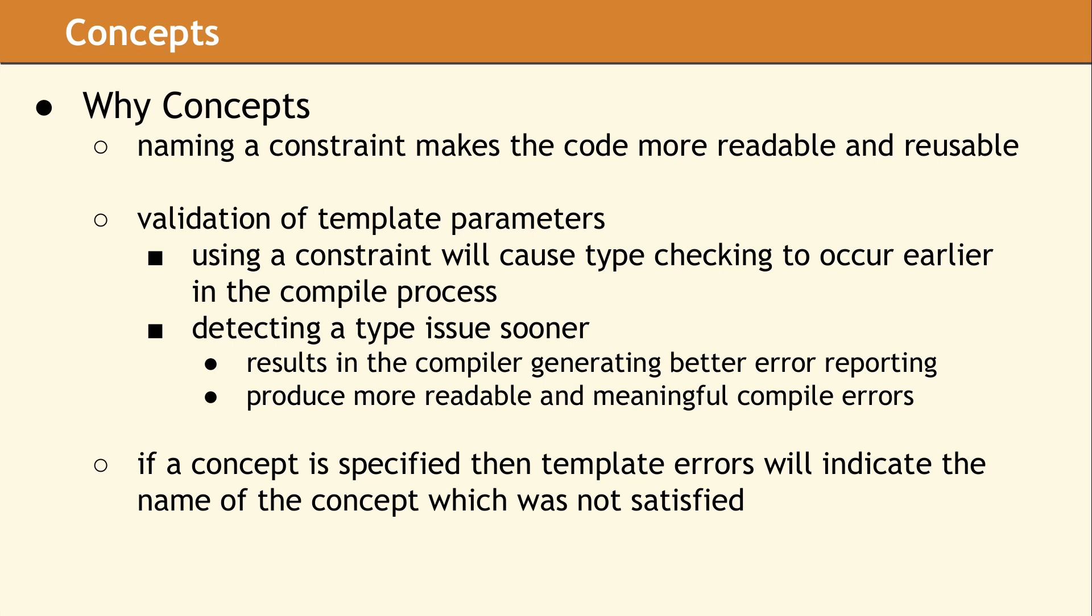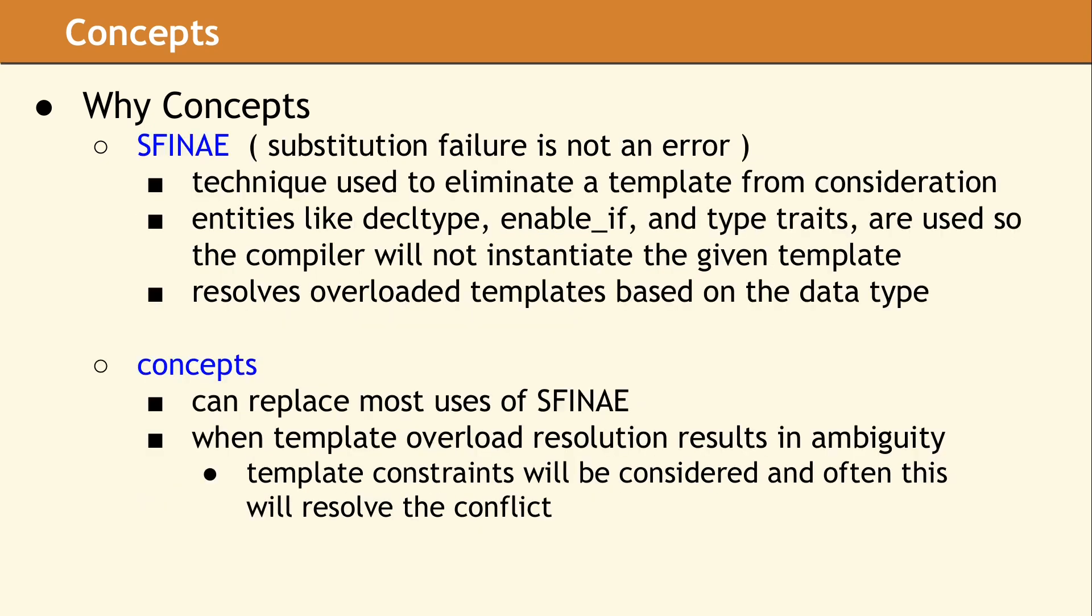A single template error can cause massive lines of spew because template errors are found too late in the compile process. The error reported is basically a compiler stack trace with lots of extra details. With constraints, the compiler can report the problem earlier, so the stack trace is shorter and more meaningful. When developers start learning concepts, many of them seem to focus mainly on the improvements in error messages. There actually is a more powerful use of concepts, and this was the aim of the Standards Committee. They decided concepts should provide a better and more powerful way to handle template overloading.